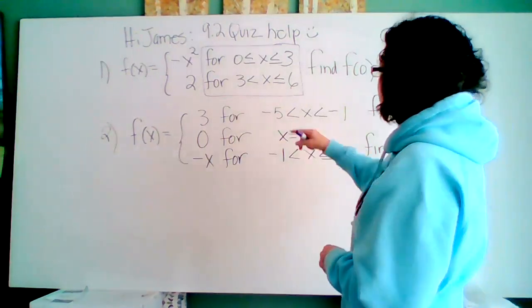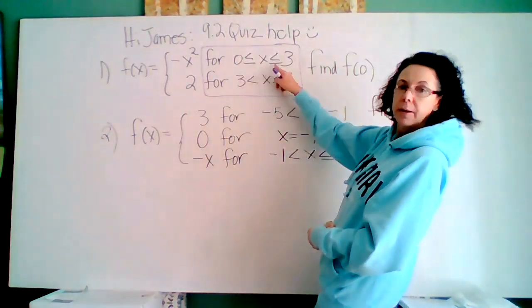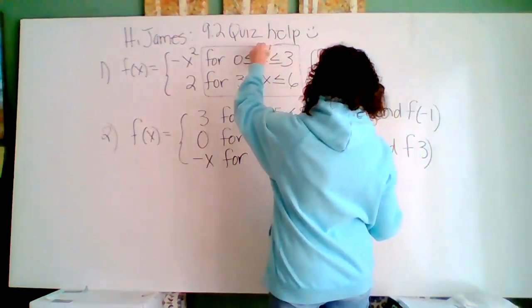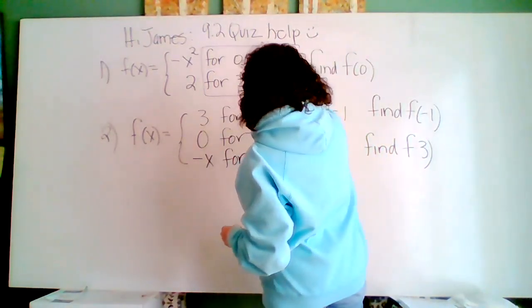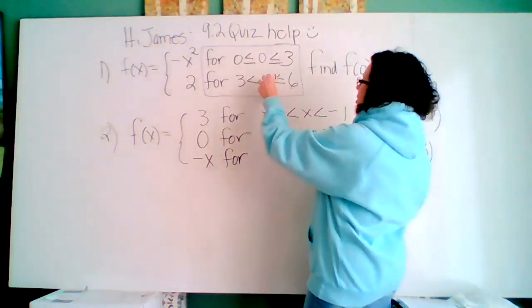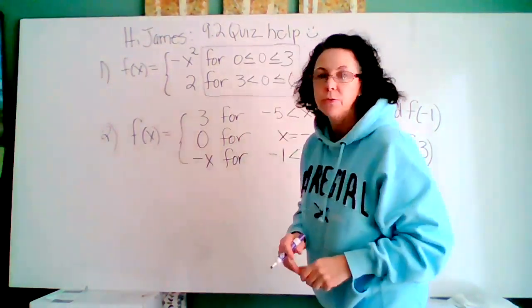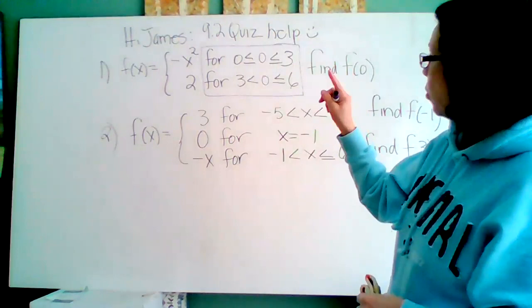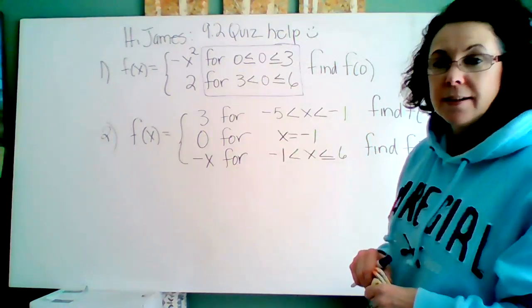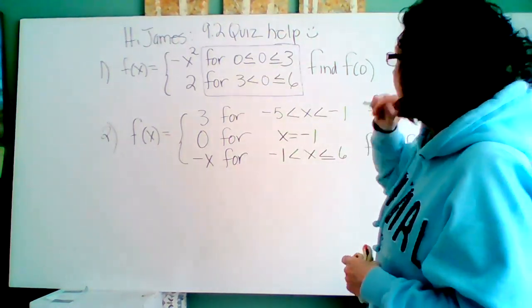So I'm going to do that in purple. See this x right here. I'm going to put in a zero because that's what x is. I'm going to put a zero here. Now let's see which one of these statements is true. And whichever statement is true, we're going to use that function to write our answer.